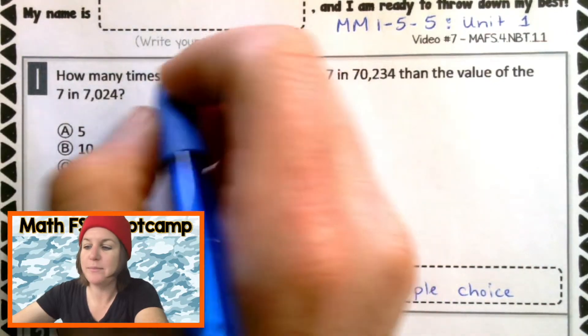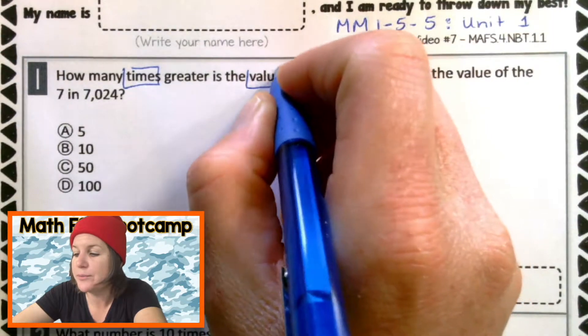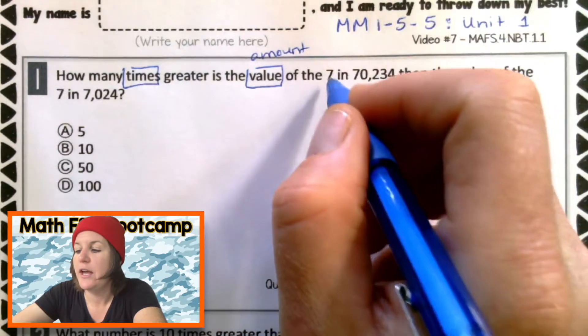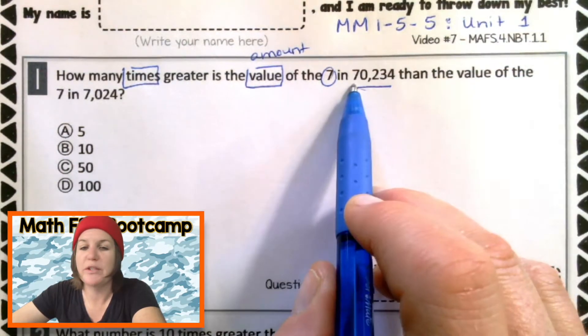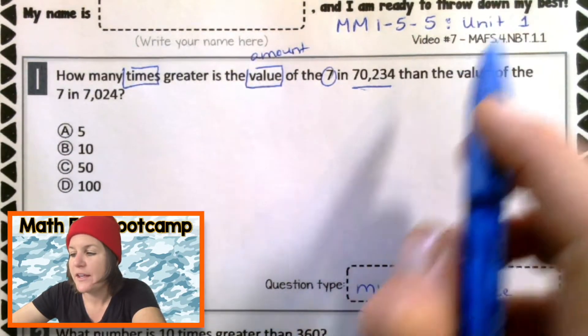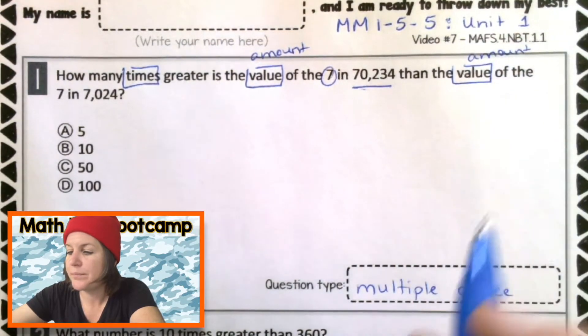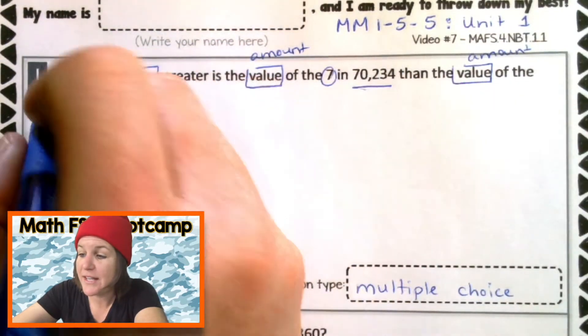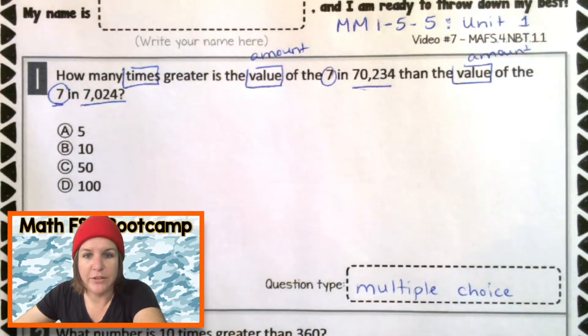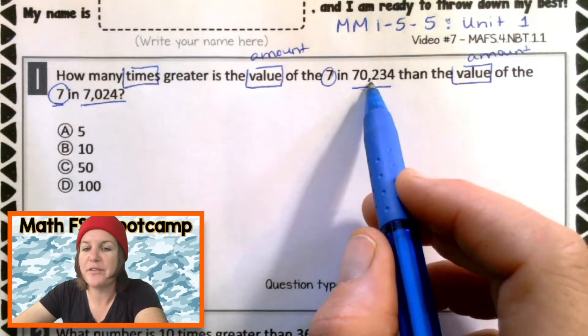It says, how many times greater is the value, that's the amount, what is something worth, of the seven in this number, which reads 70,234, than the value, which is the amount of the same digit, seven, in the number 7,024. This is a place value question right here.